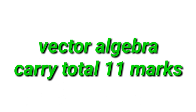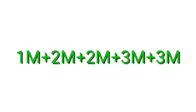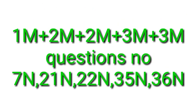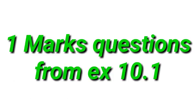If you have vector algebra, the total is 11 marks in algebra. You can divide it by 1 mark, 2 marks, and 3 marks. For 1 mark, the questions are 21 and 22. For 3 marks, the questions are 35 and 36. You can add 1 mark in algebra, and the exercise is 10.1.